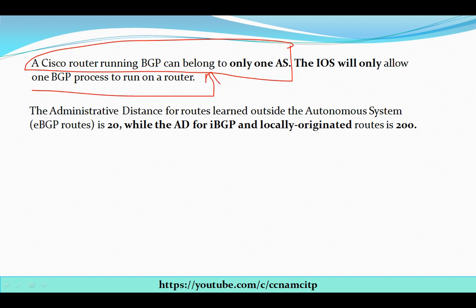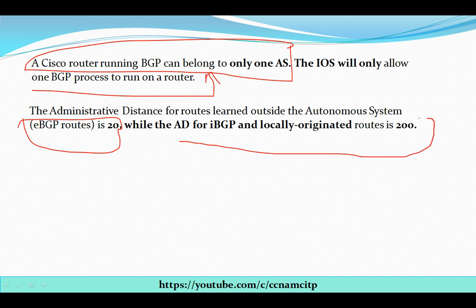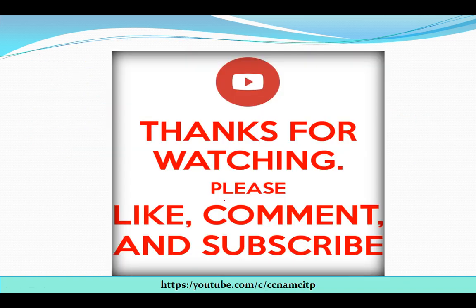Regarding administrative distance: for routes learned outside the autonomous system — that is, EBGP — the administrative distance is 20. For interior BGP, the administrative distance is 200. So EBGP is 20 and IBGP is 200.